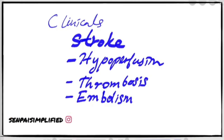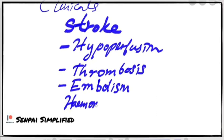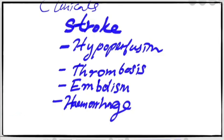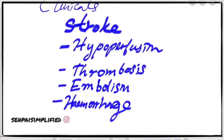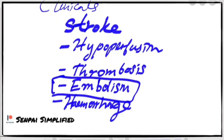The last cause, and an interesting one, is hemorrhage — an accumulation of blood within the cranial cavity. Out of these four, the most common cause of stroke is embolism. Hemorrhage is an accumulation of blood within the cranial cavity; the most common cause of stroke overall is embolism.